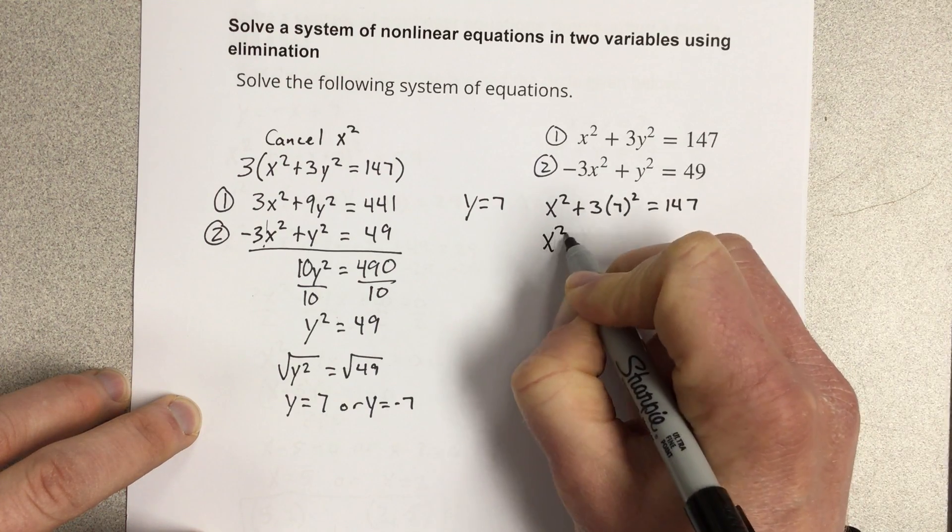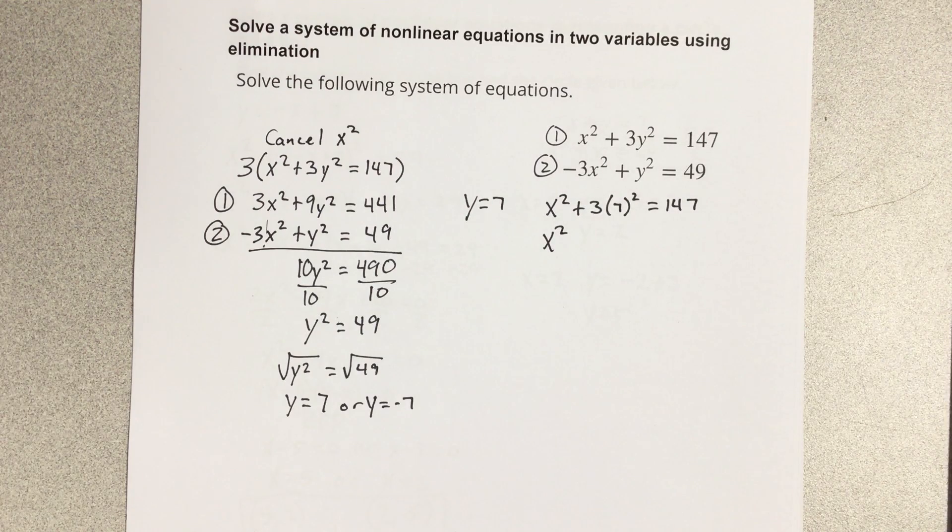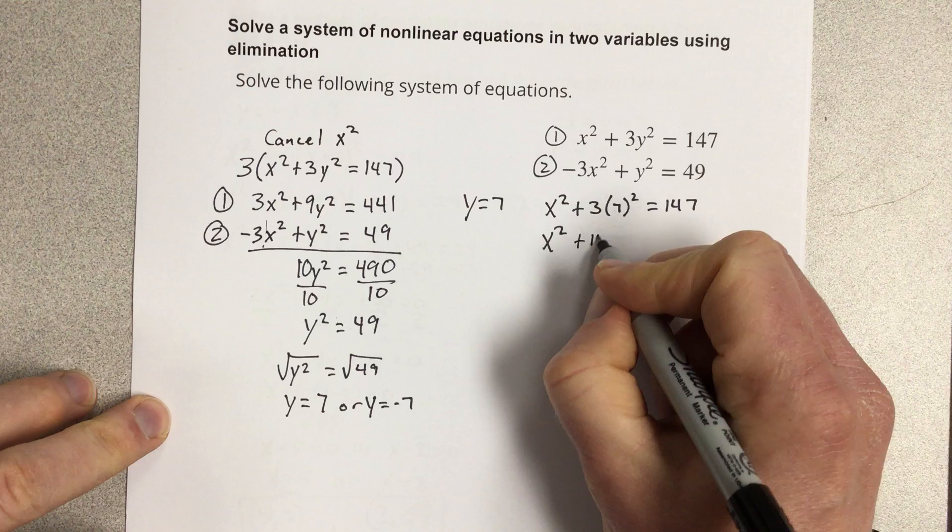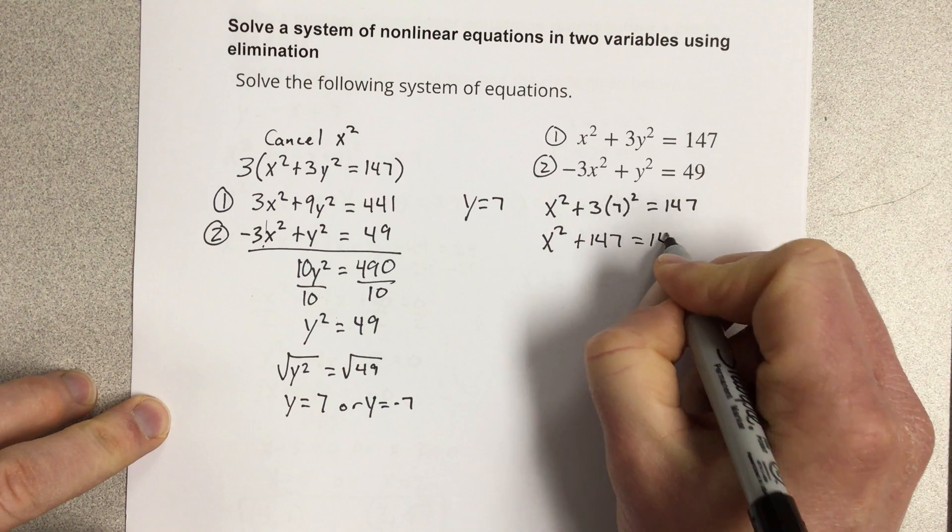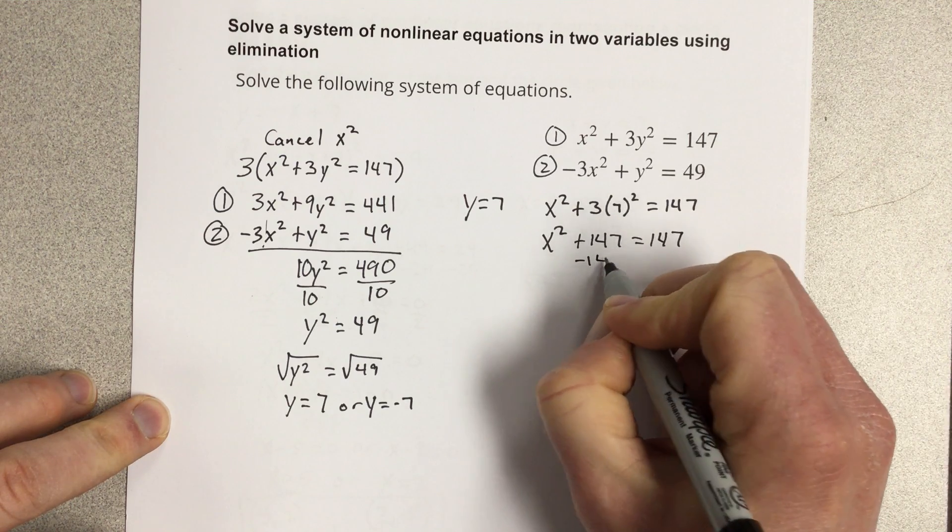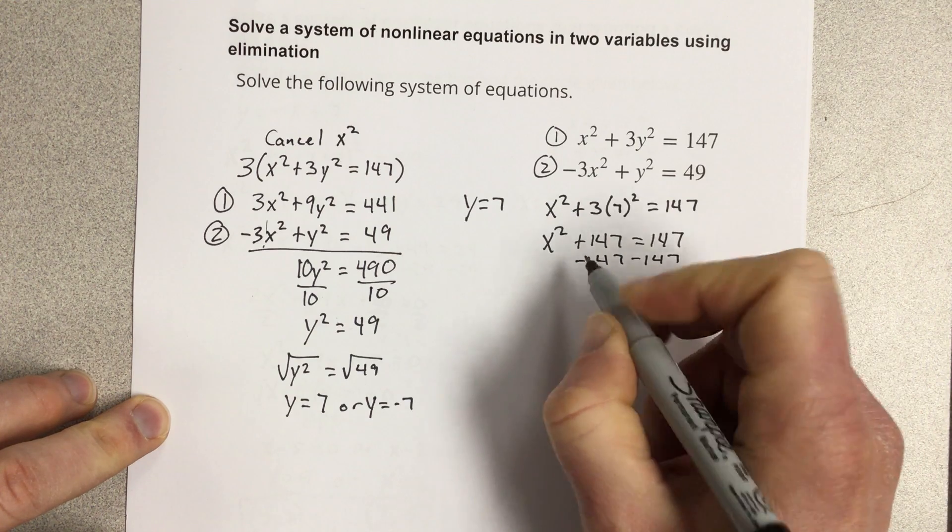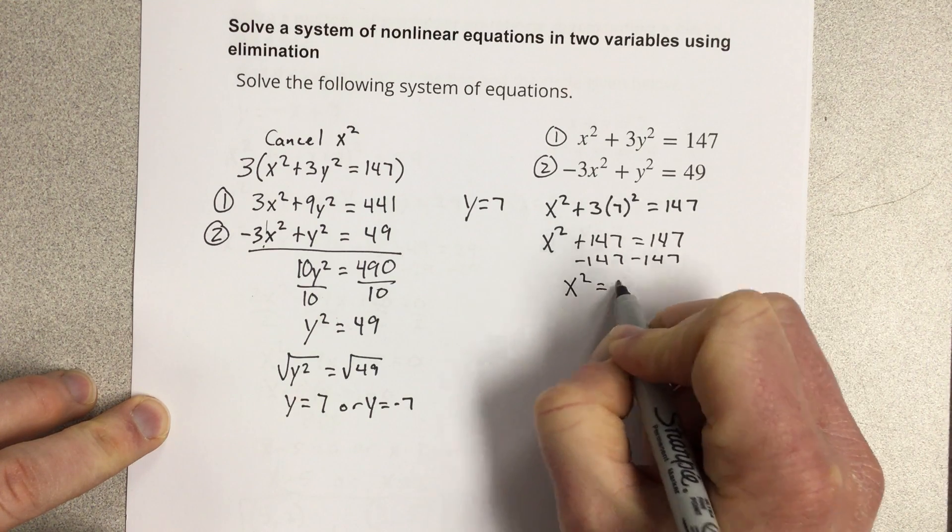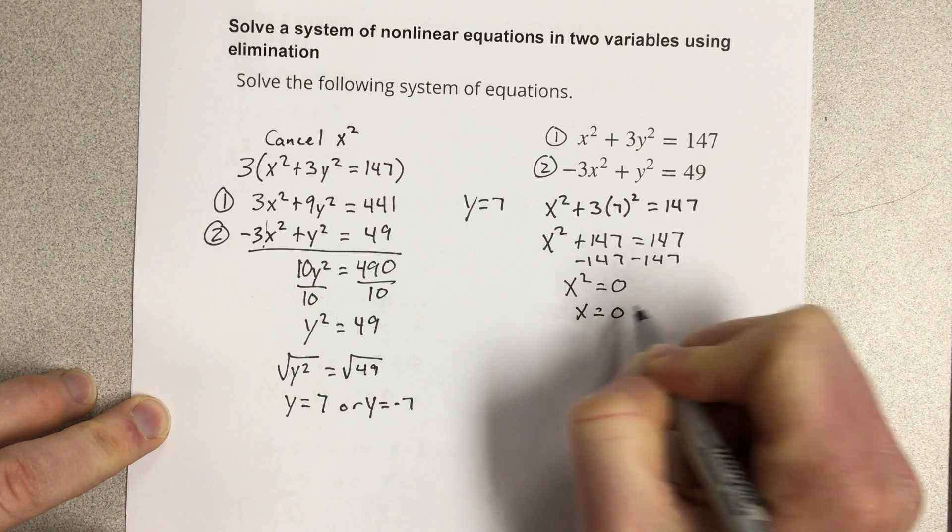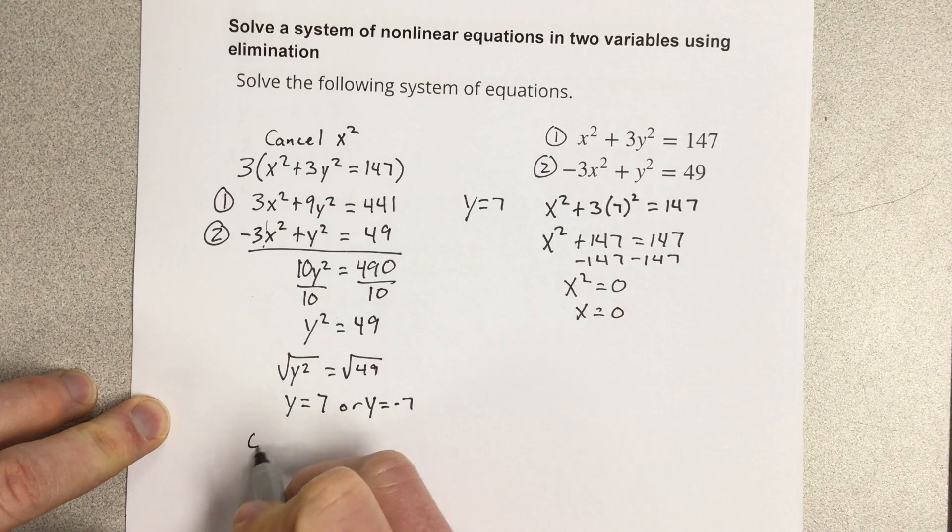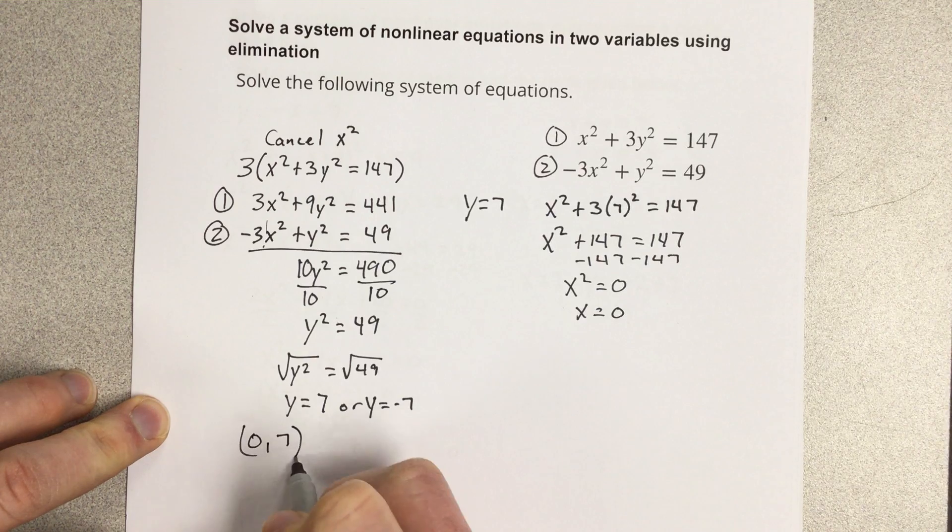This would be x². If I take 7 squared, take it times 3, I get x² plus 147 equals 147. Subtract it on each side, and we end up with x² equals 0, so x equals 0. So one coordinate is 0 comma 7. That's one of my solutions.